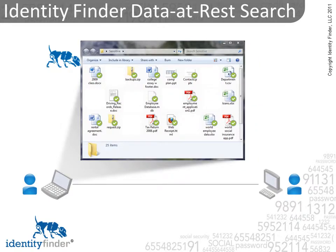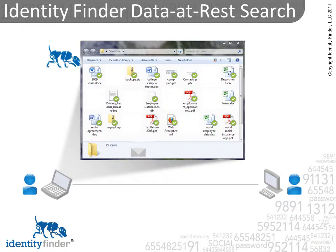Identity Finder searches and cleans all of the sensitive data at its source, meaning that once your hard drive is clean, we step out of the way. Word documents, uploaded files, information copied to a USB drive, and email attachments are now clear of sensitive data. In addition, you can rest easier knowing that you won't have a data breach should the computer ever be lost, stolen, or hacked.